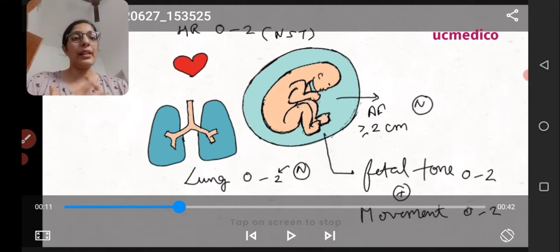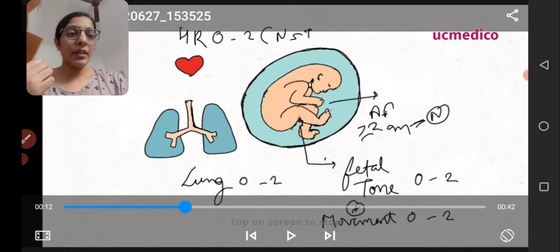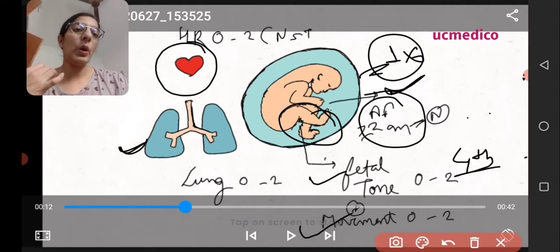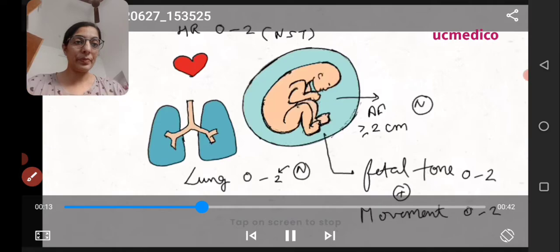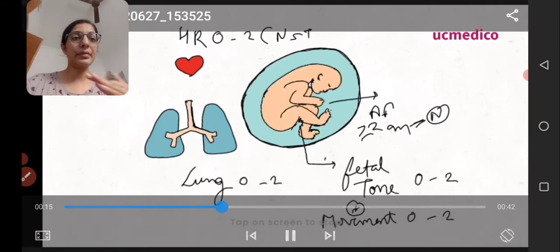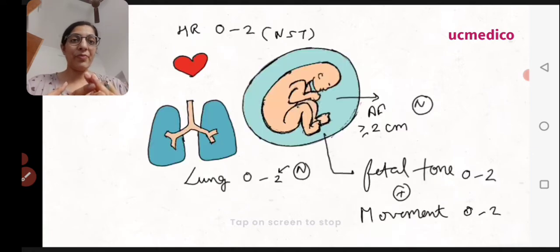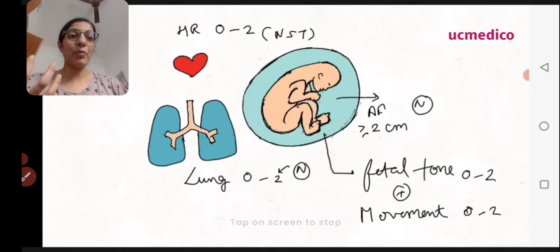I'm going to pause at regular intervals so you can see what's going on. The first thing to observe is the fetal limb — focus on the lower limb of the baby. You will see flexion and extension: full flexion, partial extension, then full extension, along with fetal heart and lung movements.